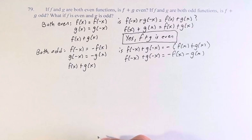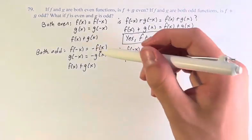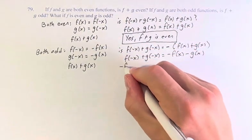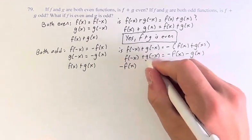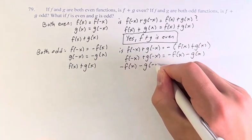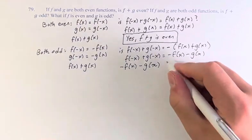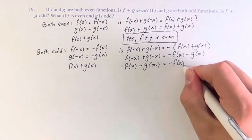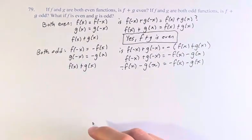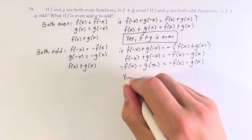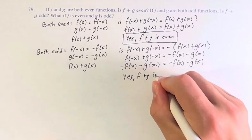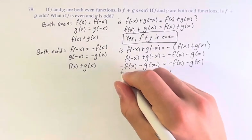Again, we can solve this by substitution. f of negative x is equal to negative f of x, so this is negative f of x, plus g of negative x is equal to negative g of x, so minus g of x. This equals negative f of x minus g of x. And you can see, once again, these are the same — so yes, f plus g is odd if they're both odd.